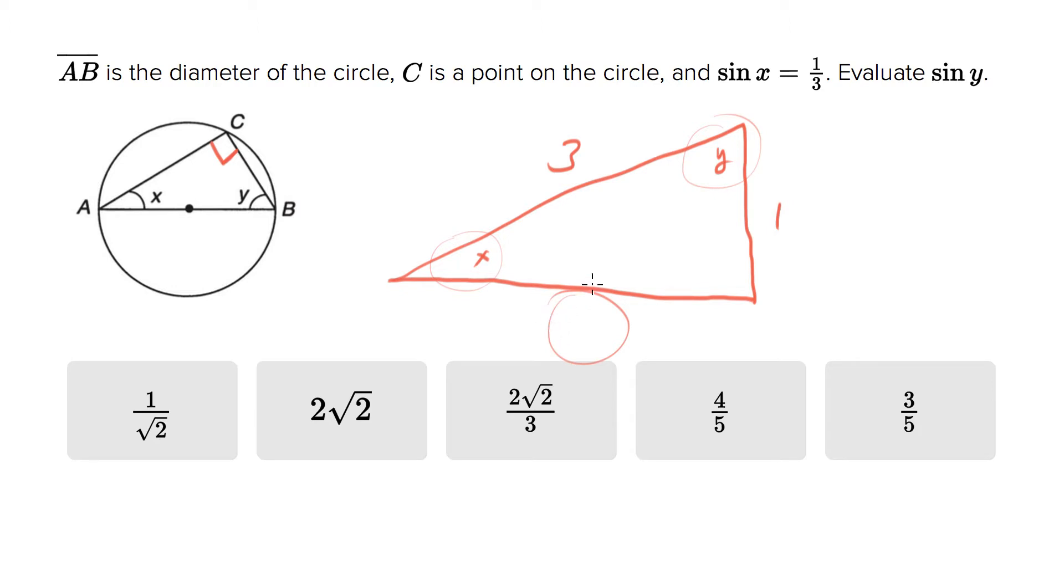the length of that side, but you can figure that out using the Pythagorean theorem, because remember this is a right triangle. So three squared plus... let's call this a. Three squared plus a squared...